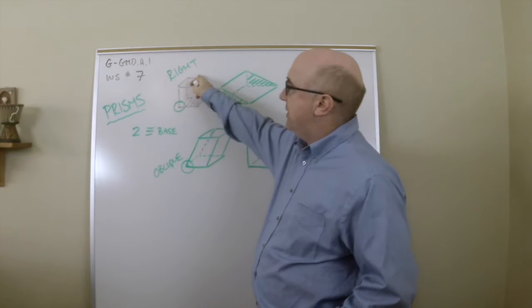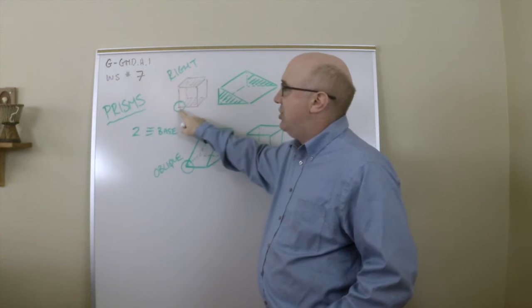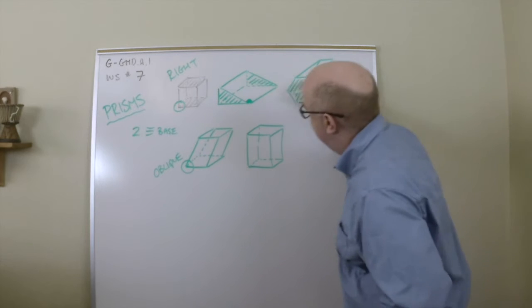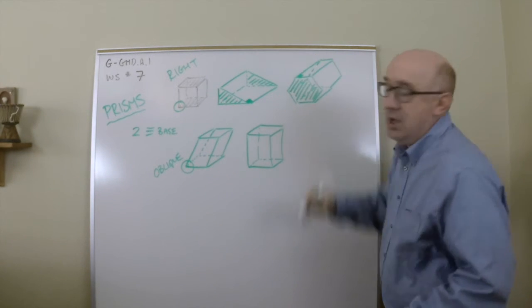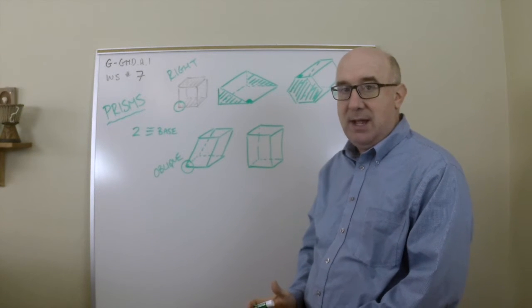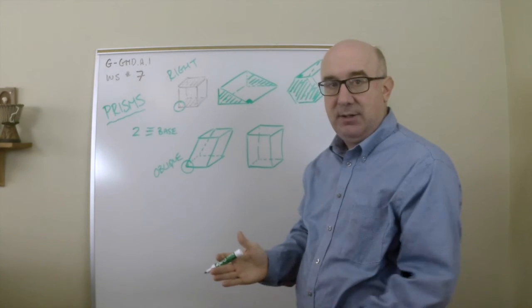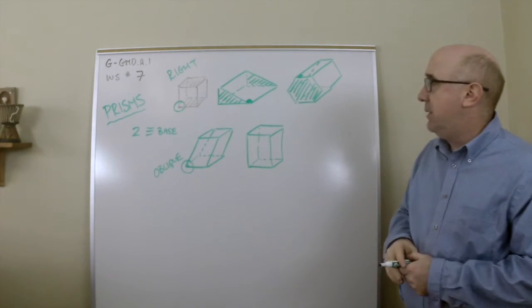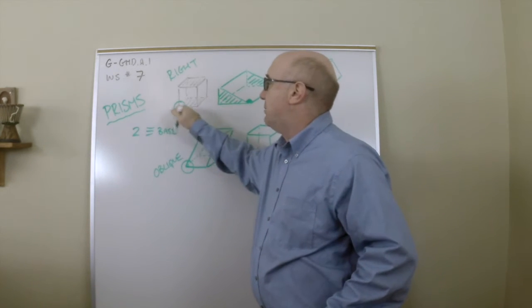Now these are called right prisms because their base and their lateral edge is perpendicular. This is perpendicular, this is perpendicular. In other words, if you were to place it on its base, the lateral edges and lateral faces would be perpendicular to that base. This is what we mostly deal with because it's easy to calculate.